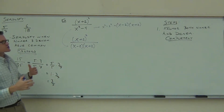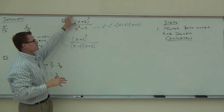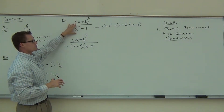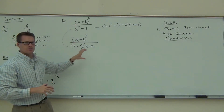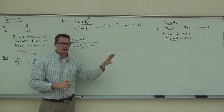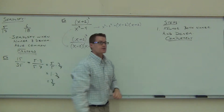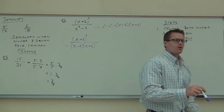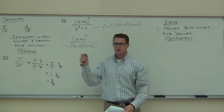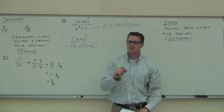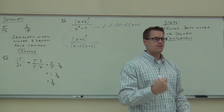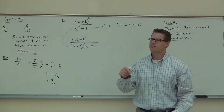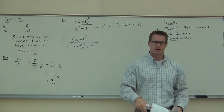So the very first step is we're going to factor the numerator and denominator completely. This one was done, this one was a difference of squares, and we have that right here. The second and last step is we're going to cross out — we're going to simplify out any common factors, not common terms, common factors. I'll show you the difference in just a second.